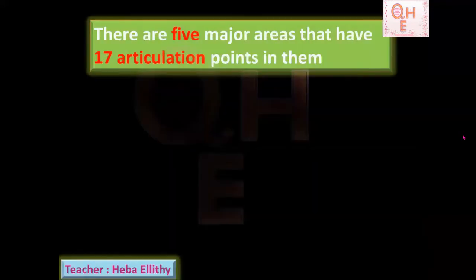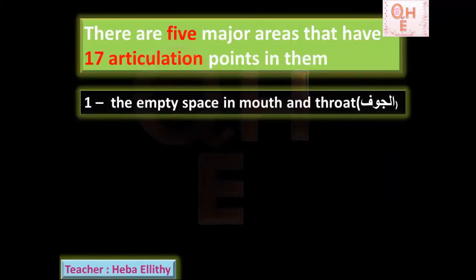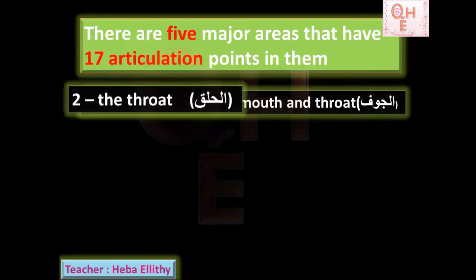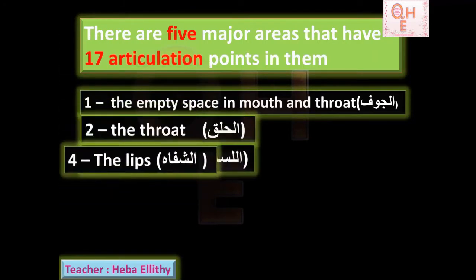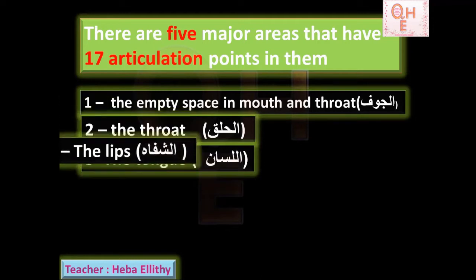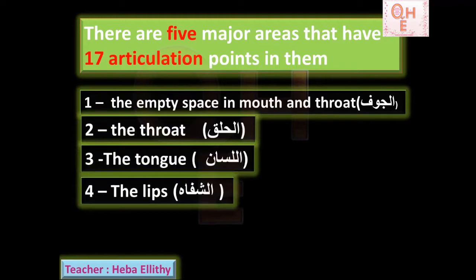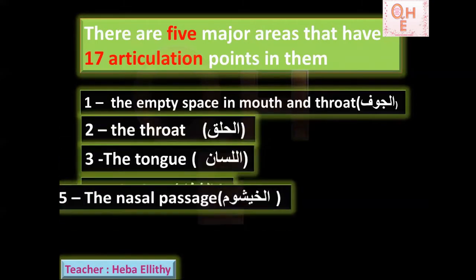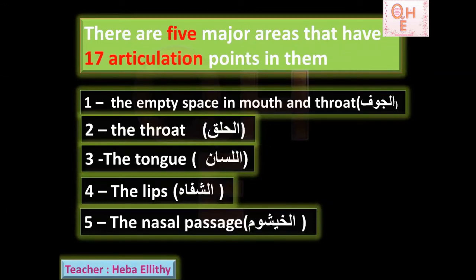We're still under the chapter of the articulation points, Al-Huroof Al-Arabiyya, Makharij Al-Huroof Al-Arabiyya. As we know, we have five major areas that have 17 articulation points totally. We finished the major area of the empty space in mouth and throat, Al-Jawf, and we finished the throat, Al-Halq, and the tongue, Al-Lisan. Today insha'Allah we will talk about our fourth major area, which is the lips, Al-Shifa.